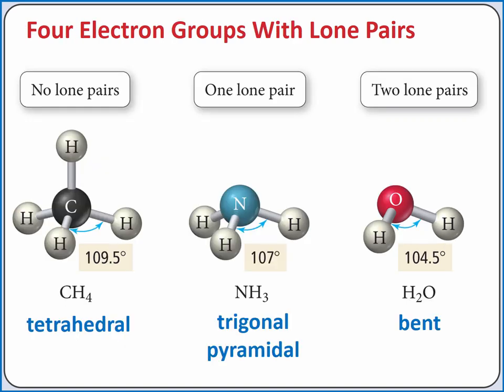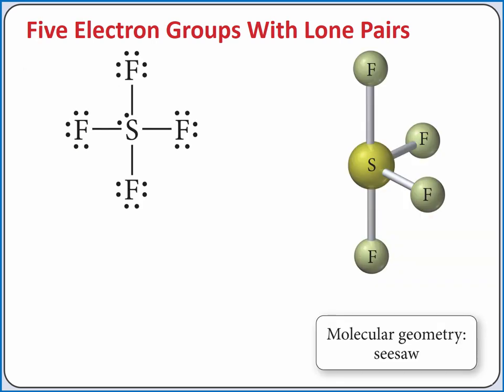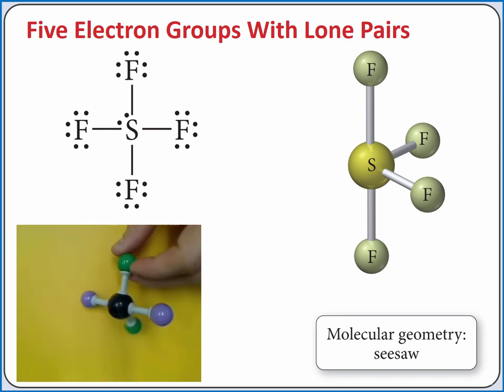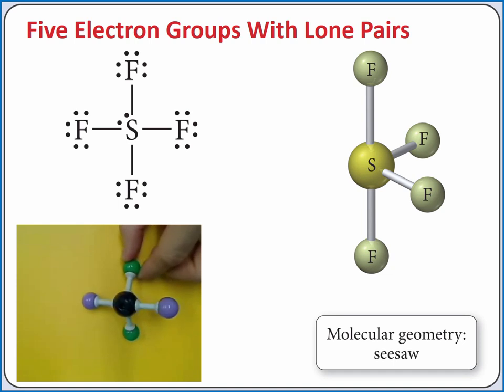So if we have four electron groups, the molecular geometry is different depending on the number of electron groups that are lone pairs. If we have four bonding groups and one lone pair on the central atom, our molecular geometry is called seesaw.